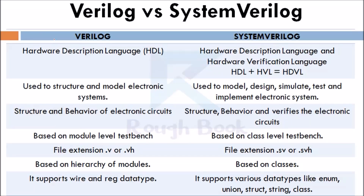In this video, let us see the difference between Verilog and System Verilog. As we know, Verilog is a hardware description language (HDL), whereas System Verilog is a hardware description as well as hardware verification language — that is, HDL and HVL. Commonly we can call it HDVL.